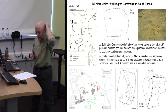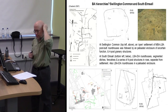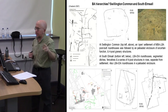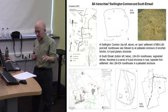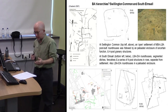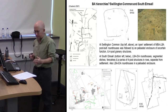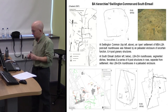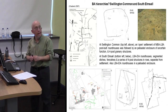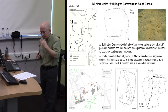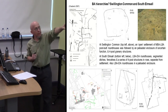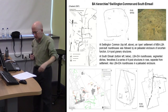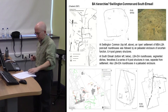Two interesting sites that have come up through developer-funded fieldwork were at Swillington Common near Leeds and South Emsall, which was on the border between South and West Yorkshire. At both, you've got Middle to Later Bronze Age and Late Bronze Age to Early Iron Age open settlements of post-built roundhouses, associated with a few four-post granary structures. At Swillington Common, you've got this unusual palisaded enclosure — an almost D-shaped structure. At South Emsall, the roundhouses were situated within a sub-rectangular palisaded enclosure formed by a post trench.